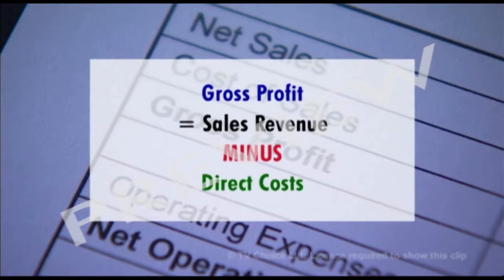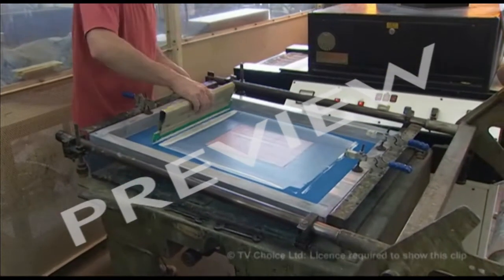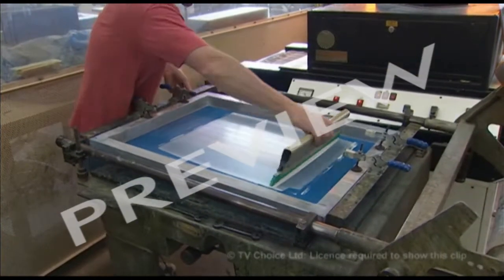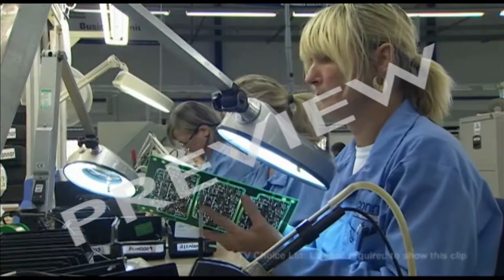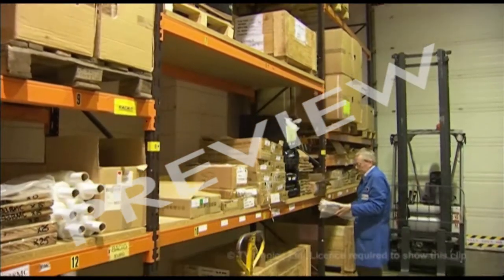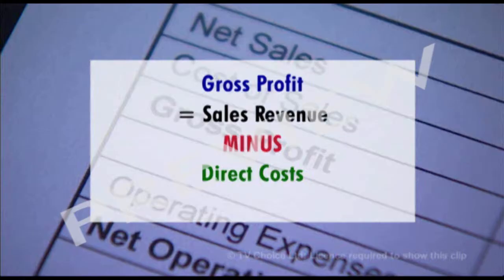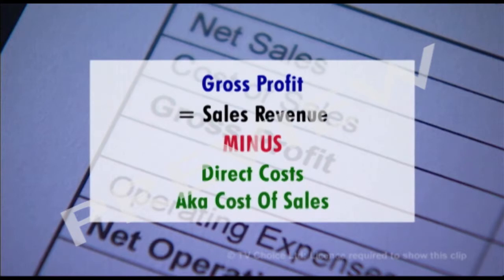Direct costs are the costs directly connected with making a product — things like packing and raw materials. Accountants have their own term for direct costs; they call them cost of sales, because they're the costs that can be put against the revenue from a product in a trading period.